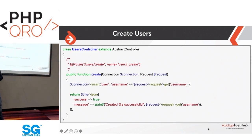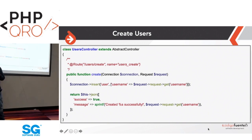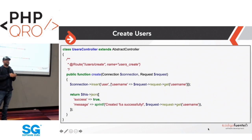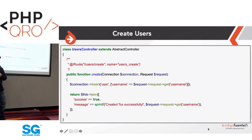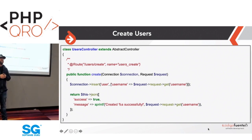We created that table and can now store user records. I modified the controller and renamed the index method to create. To get a database connection, simply type in the Connection object as a parameter to the create method. The connection class has methods that allow you to issue queries to the database. In this example, we take data from the request and insert it into the database, then return a simple JSON response saying the user was created.